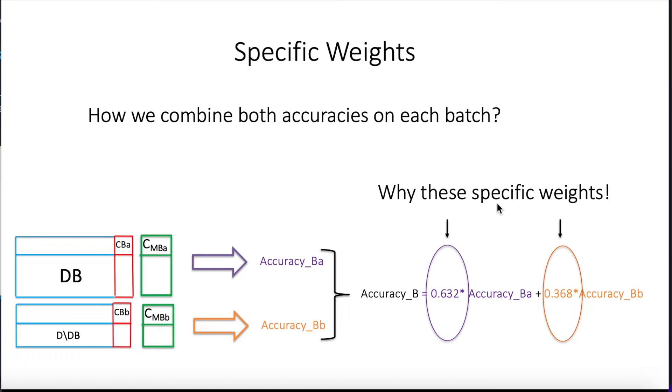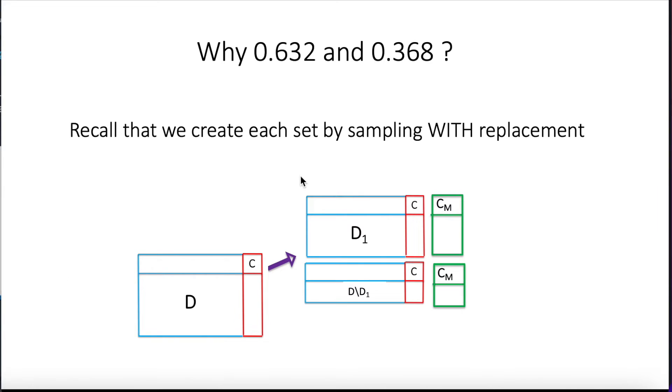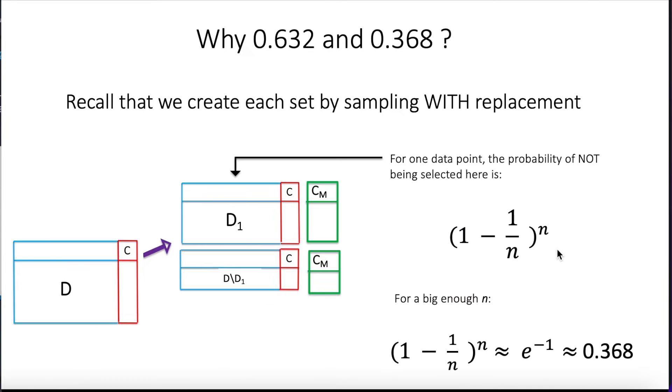So why these weights? This thing is very interesting, actually. Recall that we take these samples with replacement. So if we were to calculate the probability of being selected for one data point that exists in the initial database is 1 over n. So the probability of not being selected is 1 minus 1 over n. If we want that one specific point never get selected, means that in the n iterations, we need to make sure that that data point was not selected. So we need to repeat this expression n times, multiplied n times. And this expression has a very well-known limit for a big n. The limit is e to the power of minus 1, and that number approximately is 0.368. So this is the probability of not being selected.